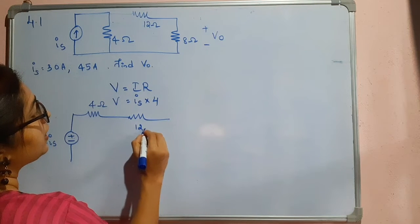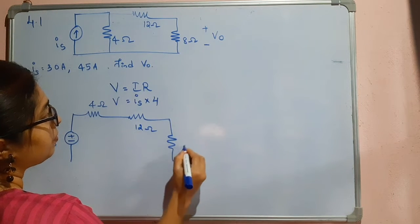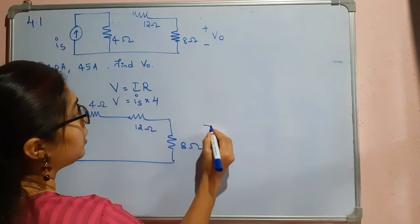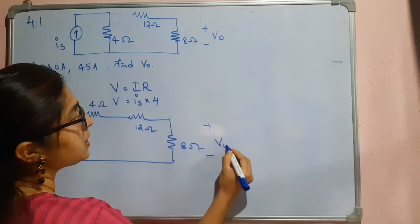Next this will be as it is - 12 ohm and here it is 8 ohm. Now we have to find the voltage across this 8 ohm.